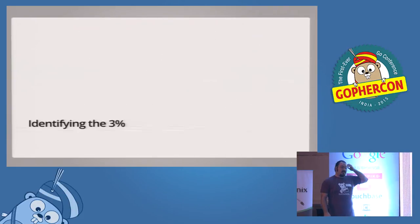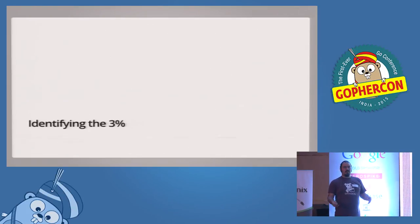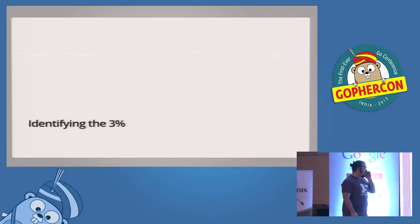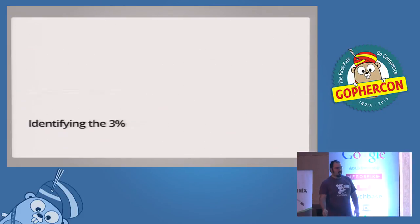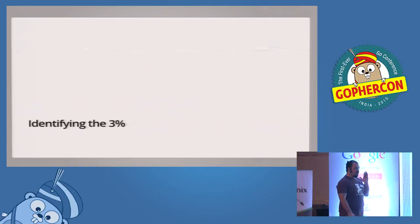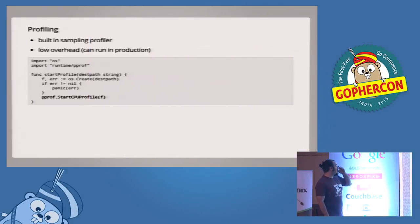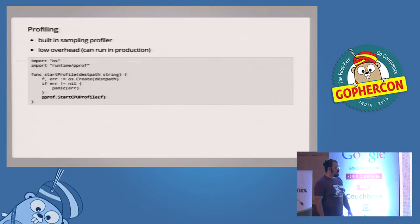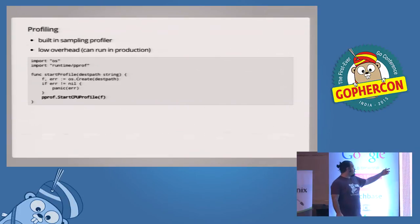The first part I want to talk about is identifying the 3% that Knuth was talking about — when we write a program, how do we figure out where we'll get the most benefit? This is actually called Amdahl's Law. You just want to know where your program is spending time and then attack that section. The first way we can do it is with a profiler. Go has a nice built-in sampling profiler — it's really low overhead, running about once every 100 milliseconds.